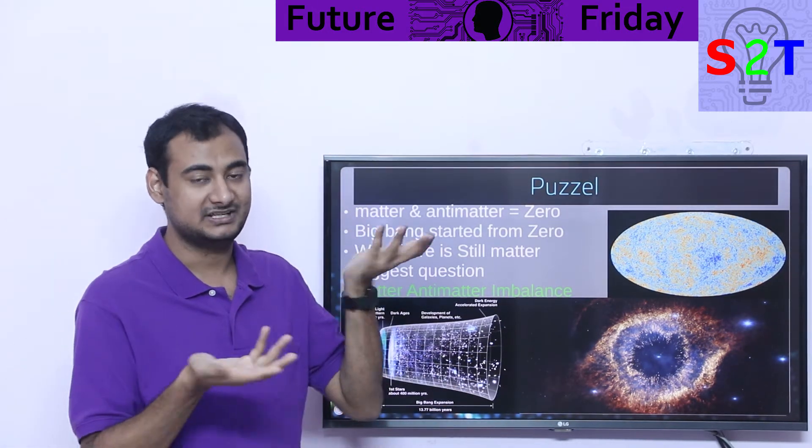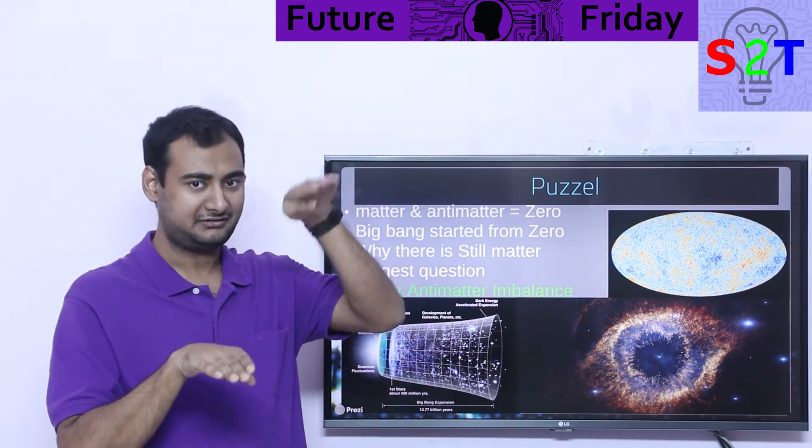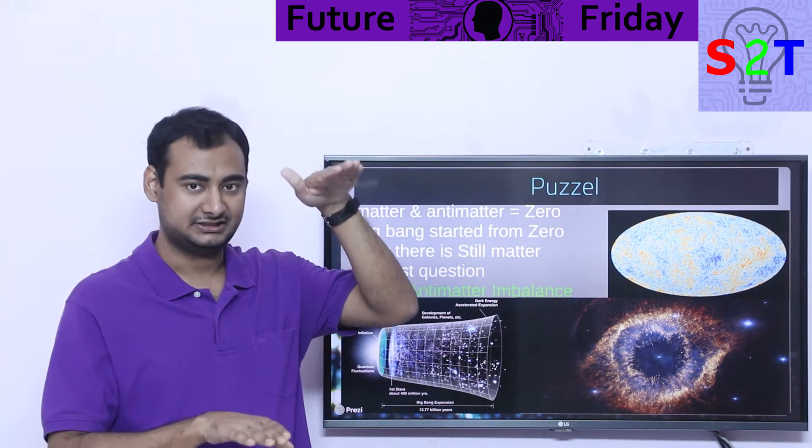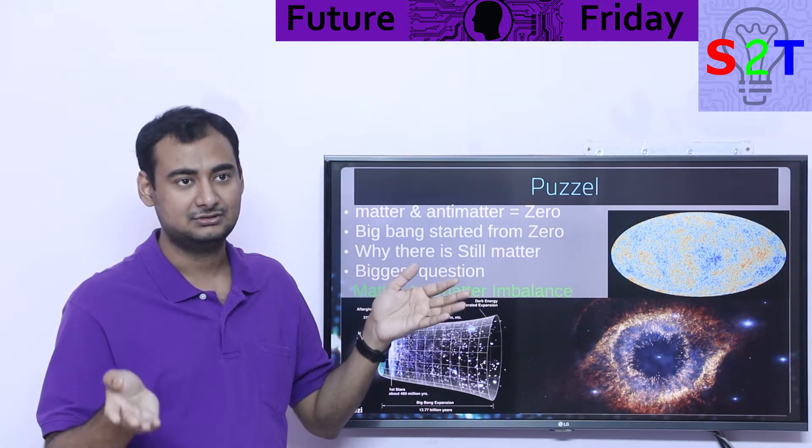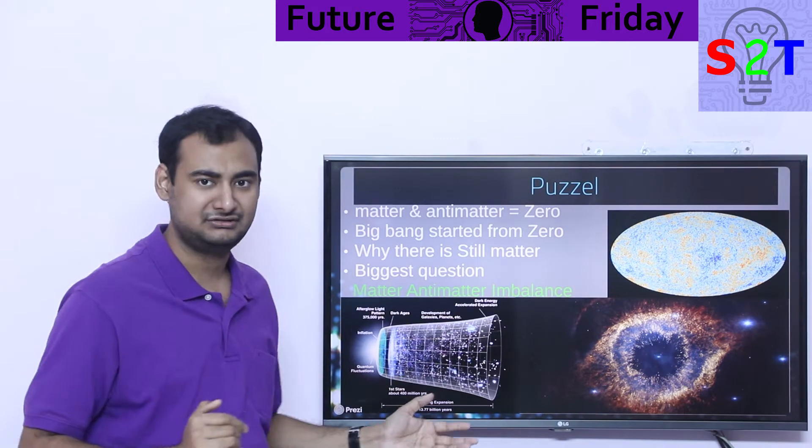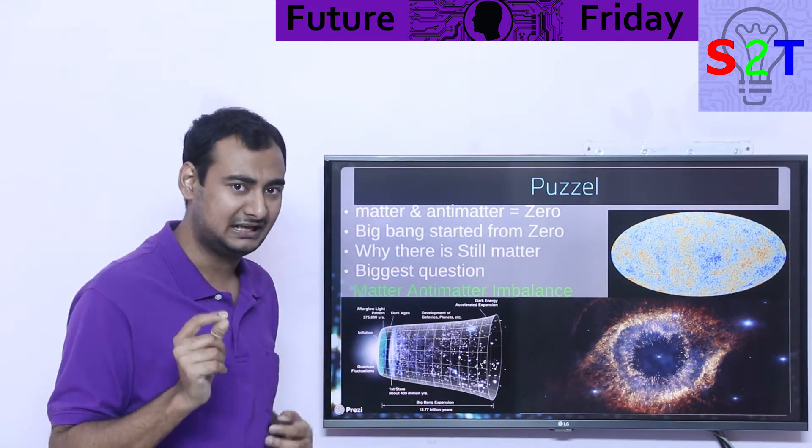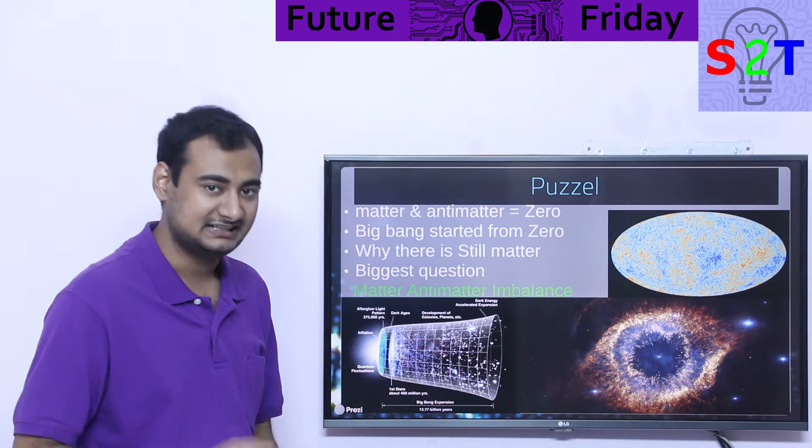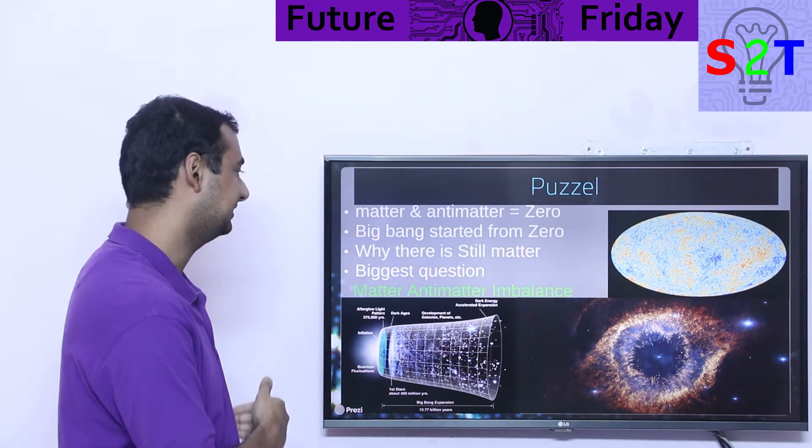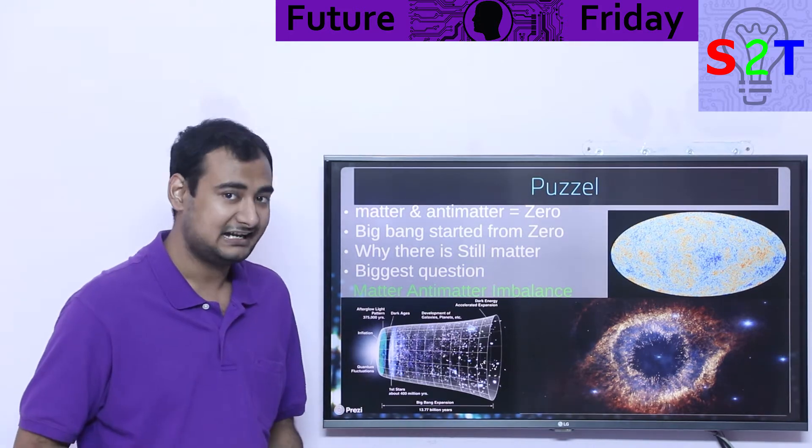So universe can come out of zero because it's basically vibration in zero. But here's the deal: somehow matter was created, antimatter was created, both of them merged and go to zero, but somehow there was an imbalance. Now that imbalance is our universe. Everything you see here around you, it's that imbalance. How the heck did that imbalance happen? That is the core question here.